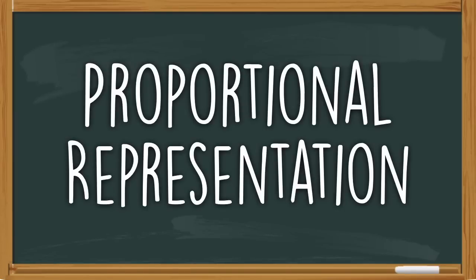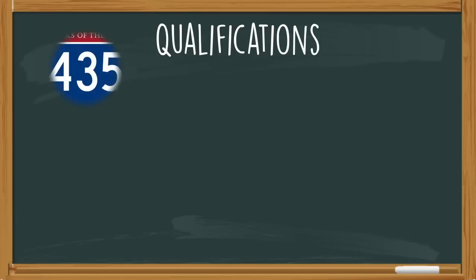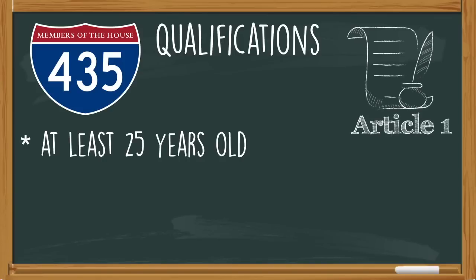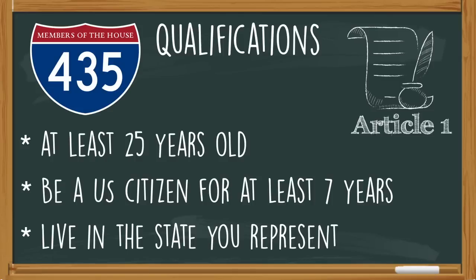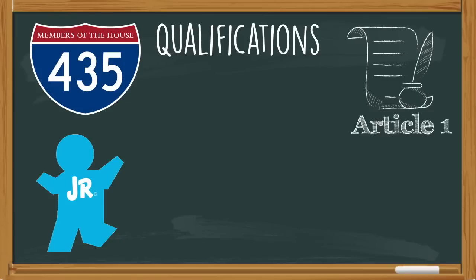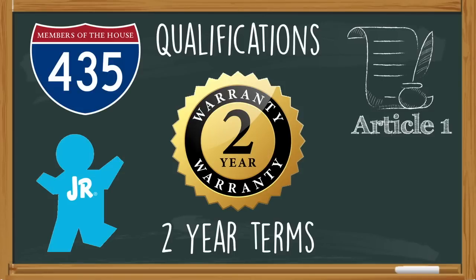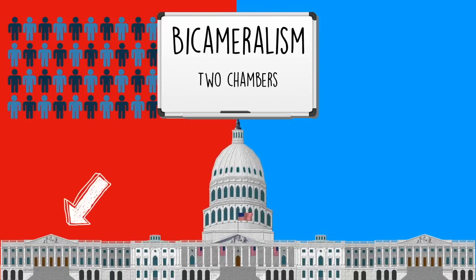The House of Representatives is considered to be the lower chamber, because some of the qualifications to be a member of the House are less than the other chamber. Requirement one: you've got to be 25 years or older. Requirement two: you have to be a citizen for at least seven years. Requirement three: you have to live in the state you want to represent. Lesser qualifications also means a shorter term — members of the House of Representatives only have a two-year term before they need to be re-elected.